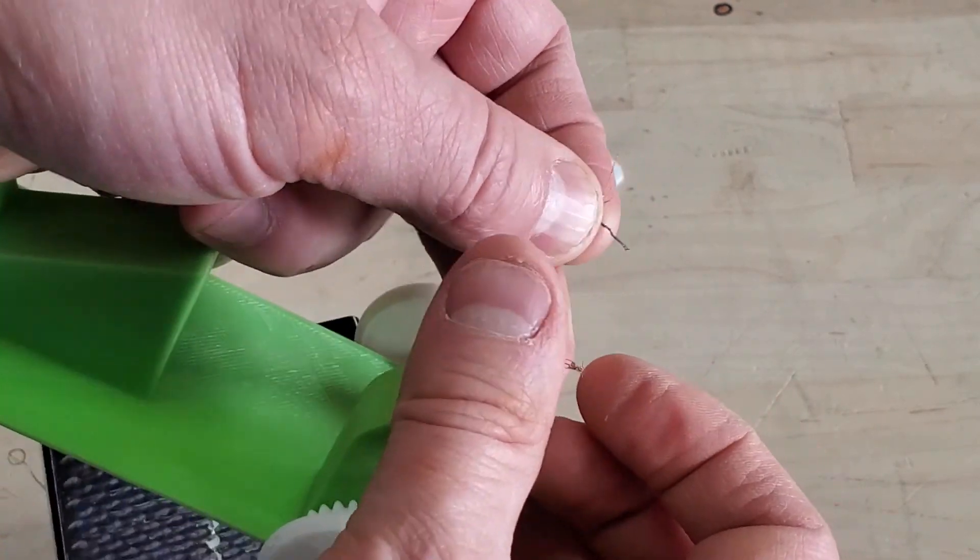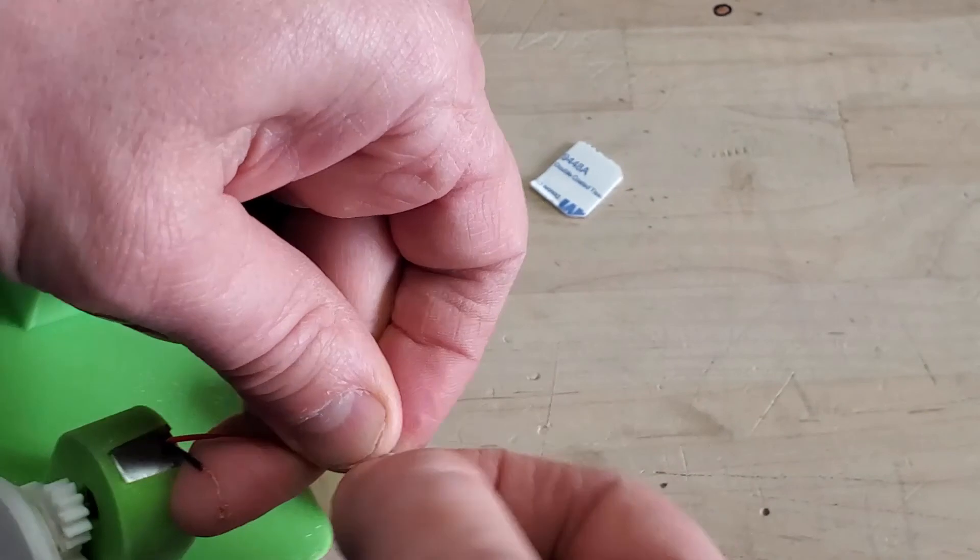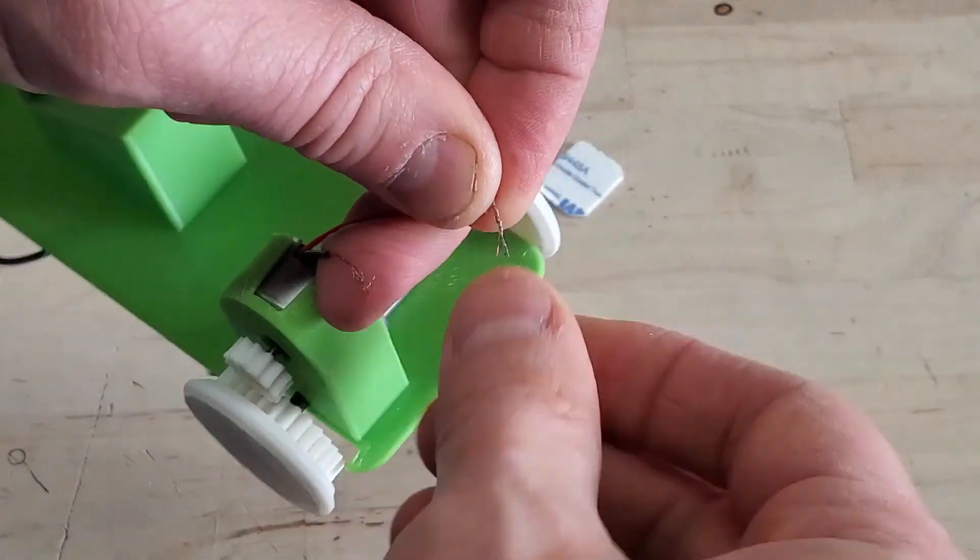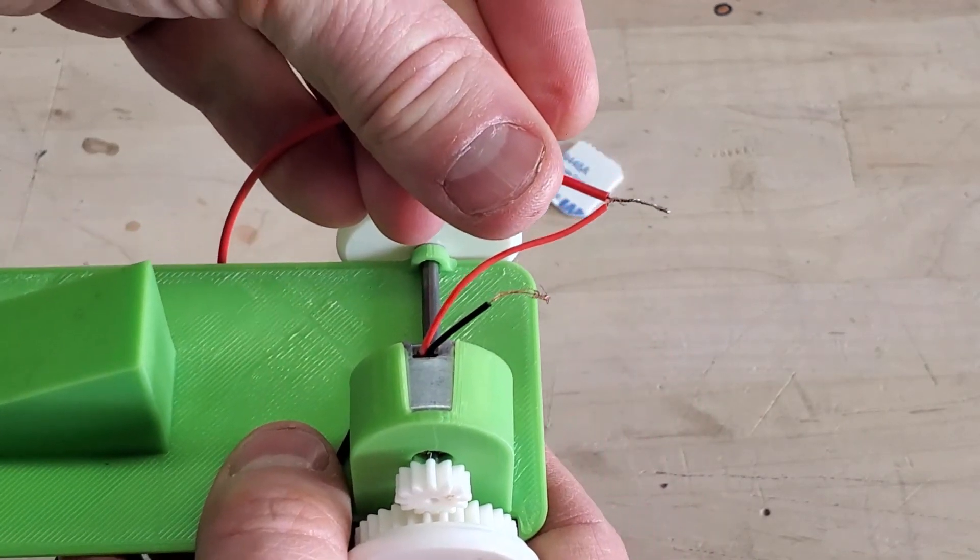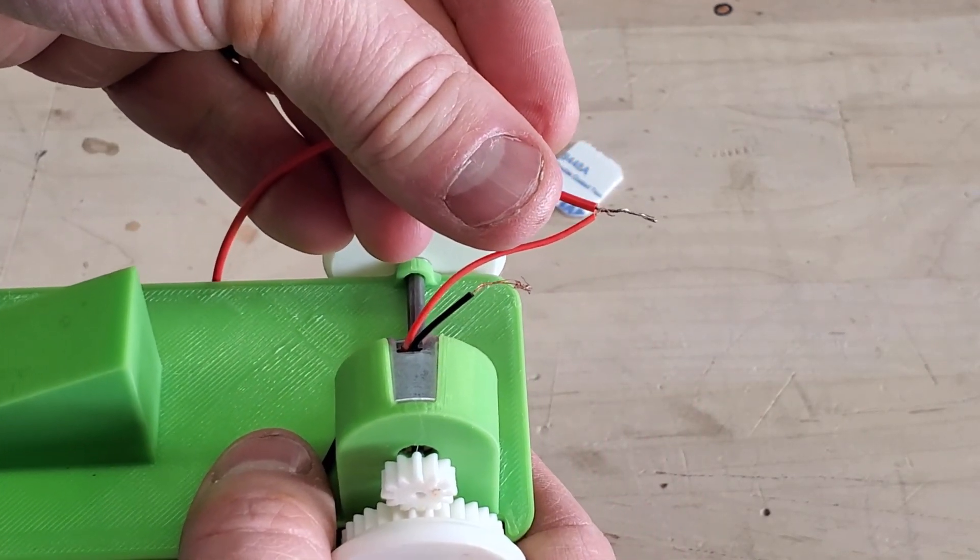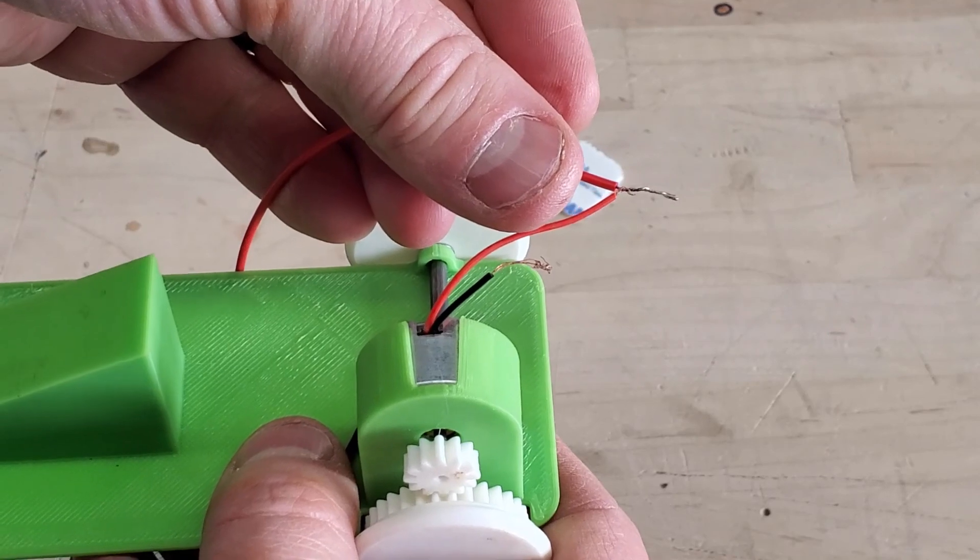Then twist them. When you're done, you have two wires twisted together like this. Repeat this procedure for the black wires.